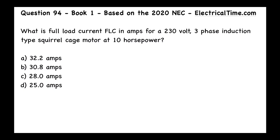The answer to this question is going to be C — 28 amps. First, we ask ourselves what article we're talking about. We see clues: FLC, full load current, and motor. That tells us we have to go to Article 430.